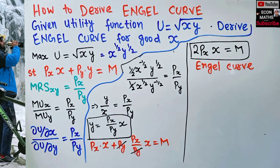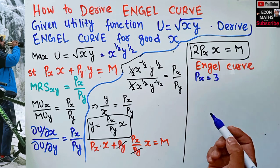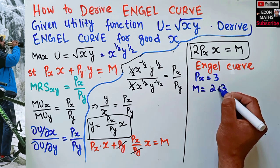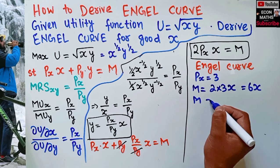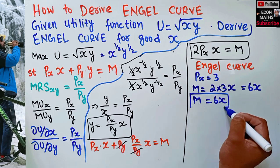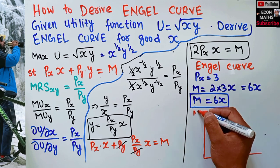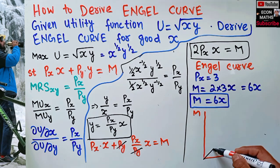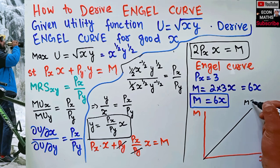The Engel curve shows the relationship between income and quantity demanded, holding prices constant. For example, if the price of good x is 3, then m = 2·3·x = 6x. So m = 6x is our simplified Engel curve. If we graph it with income on the vertical axis and quantity demanded on the horizontal axis, it passes through the origin with no intercept.